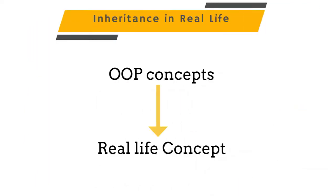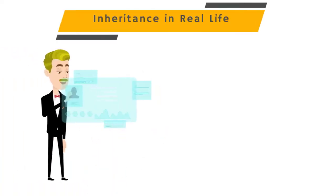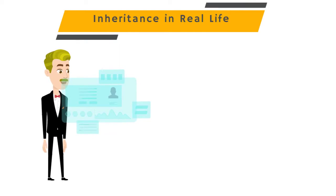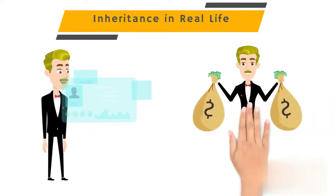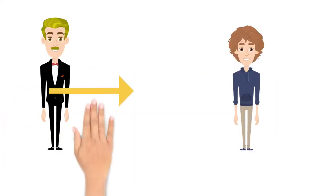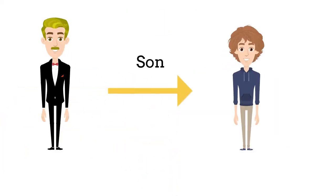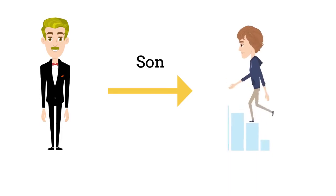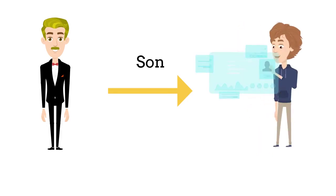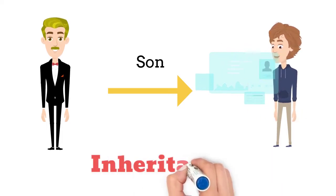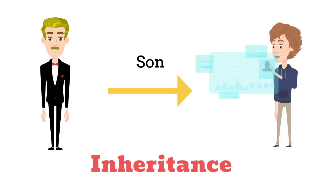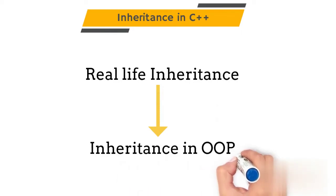Most of the object-oriented concepts are taken from real life. So what is inheritance in real life? Consider Mukesh Ambani. He built Reliance Industries from scratch, putting a lot of effort and money into building his business. Now he has a son. His son doesn't need to work from scratch to build his business — he can directly inherit his father's business. It will save him a lot of money as well as effort. This concept, which allows us to inherit property, business, and wealth from our fathers without starting from scratch, is called inheritance.